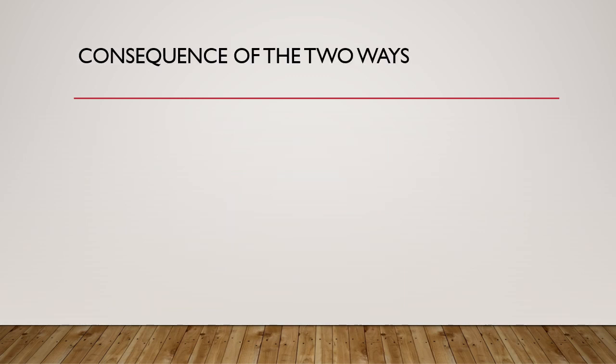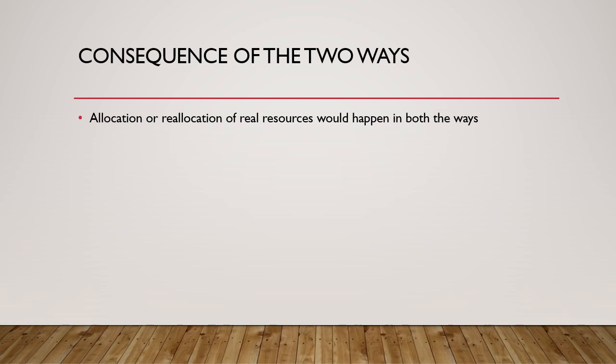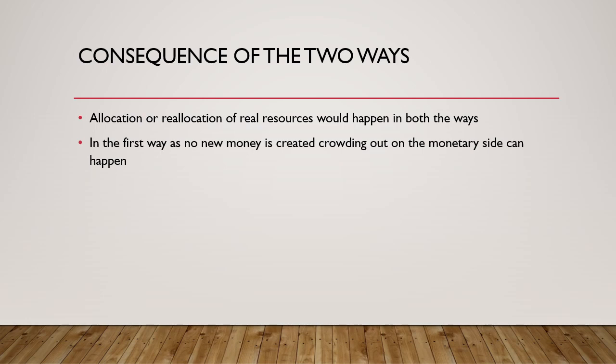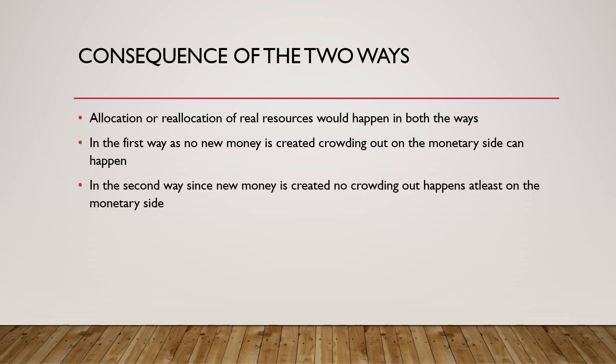What are the consequences of the two ways of funding the fiscal deficit for the government and the economy? In both cases, a reallocation of real resources will happen. However, in the first case, since little new money is created, crowding out will occur on the monetary side, which can affect future investments and hence growth. In the second way, since new money is being created, no crowding out happens. Importantly, inflation may or may not happen in both ways — we will see how fiscal deficit affects inflation further.